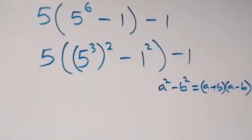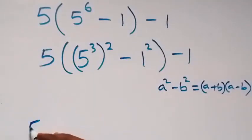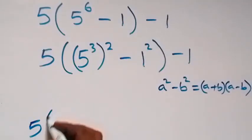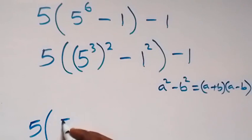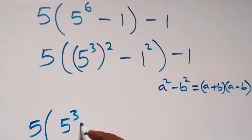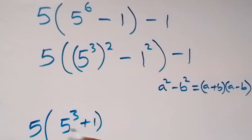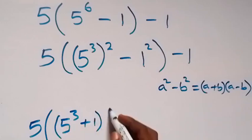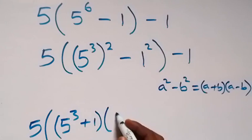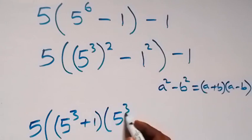That is, here we have 5, then into bracket we have 5 raised to power 3 plus 1. Then we have into bracket 5 raised to power 3 minus 1.